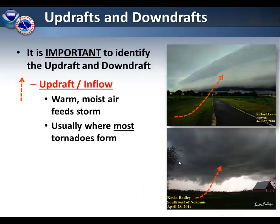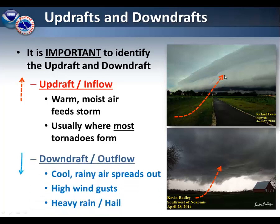When you're spotting, it is important to identify the updraft and the downdraft. The updraft, or the inflow into the storm, feeds it warm, moist air. Usually, this is where most tornadoes will form. The downdraft, or the outflow, spreads cool, rainy air outward from the storm. The outflow is associated with high wind gusts, as well as heavy rain and hail.